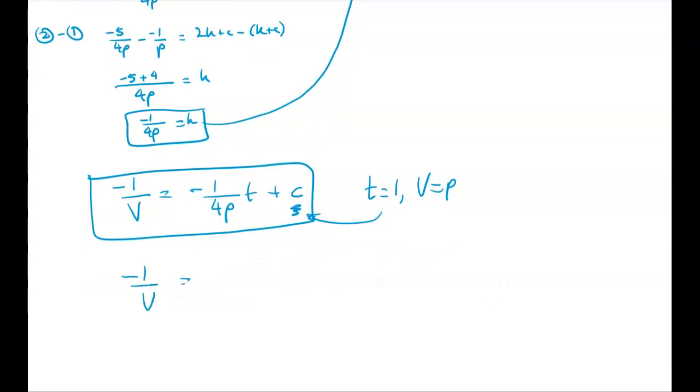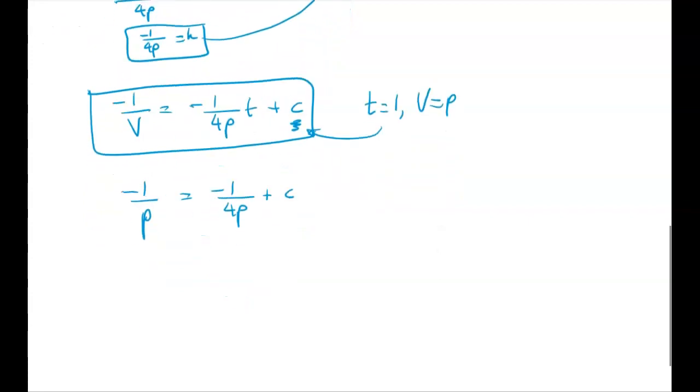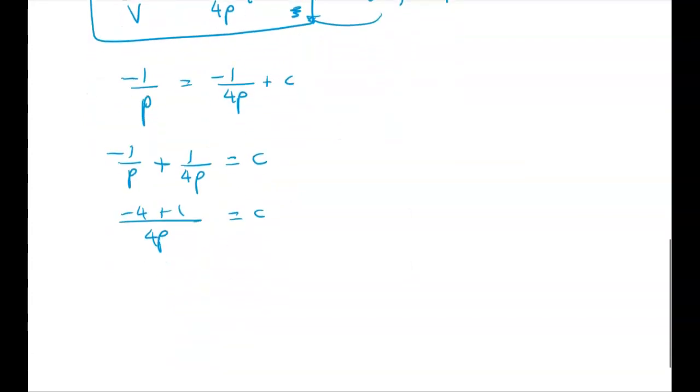So negative 1 over V is equal to negative 1 over 4P plus C, except that I should have substituted P in here for V. Now we have negative 1 over P plus 1 over 4P is equal to C. Again getting a common denominator I get negative 4 plus 1. That gives me negative 3 over 4P is equal to C.